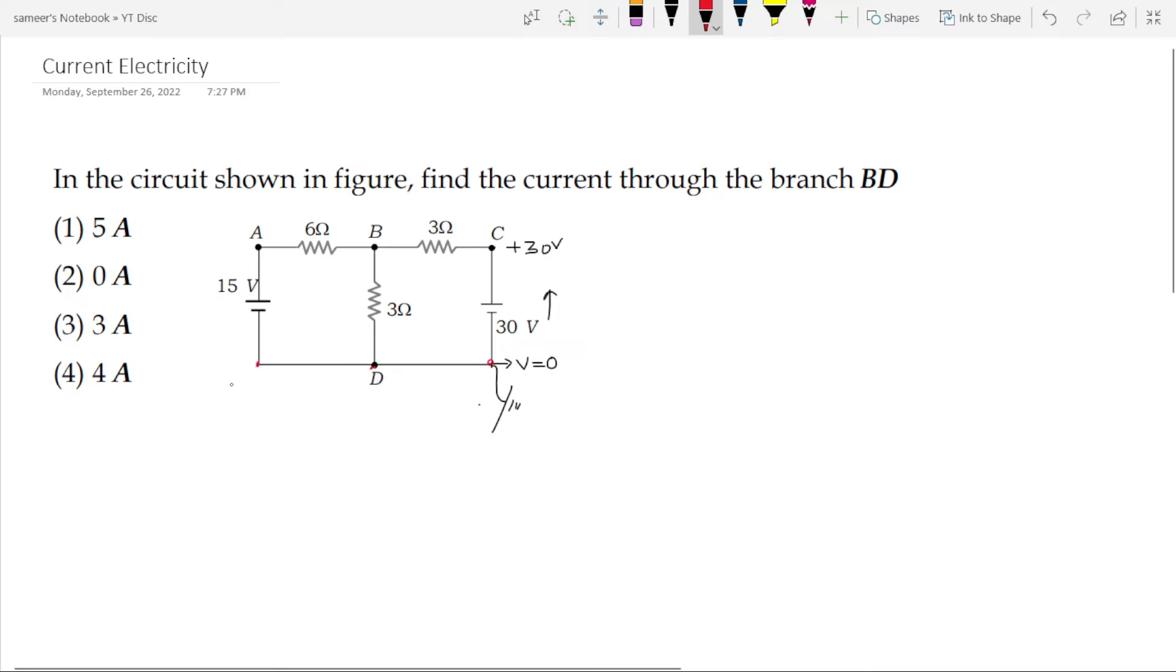Similarly, the potential at this point is also 0 volts since you have connected it to earth and the potential at point A becomes plus 15 volts.